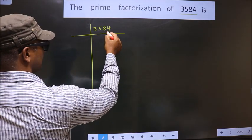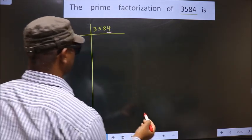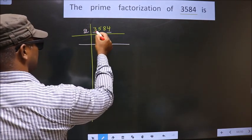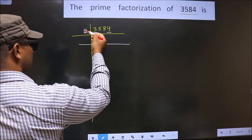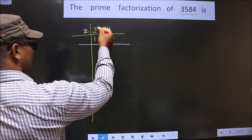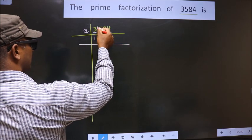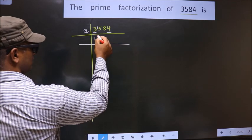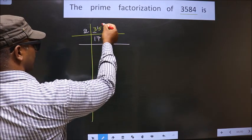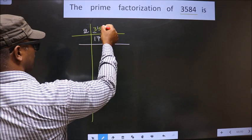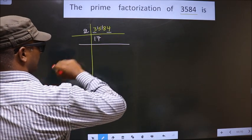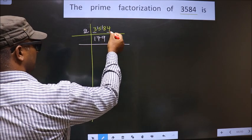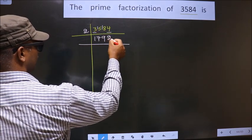For this number, the last digit is 4, which is even, so we take 2 here. First number is 3. A number close to 3 in the 2 table is 2 once 2. 3 minus 2 is 1, carried forward making it 15. A number close to 15 in the 2 table is 2 sevens 14. 15 minus 14 is 1, carried forward making it 18. When do we get 18 in the 2 table? 2 nines 18. Next number is 4. When do we get 4 in the 2 table? 2 twos 4.